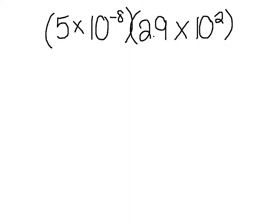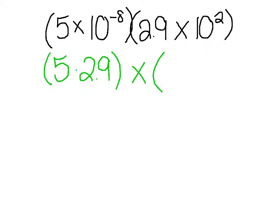When multiplying and dividing in scientific notation, I like to take it into two parts. I like to multiply my numbers together and I like to multiply my exponents together — basically group them, which shouldn't be any surprise because we've been doing this previously. So I take my numbers and multiply those together: 5 times 2.9, and then I take my exponents of 10 and put those together: 10 to the negative 8 times 10 squared.